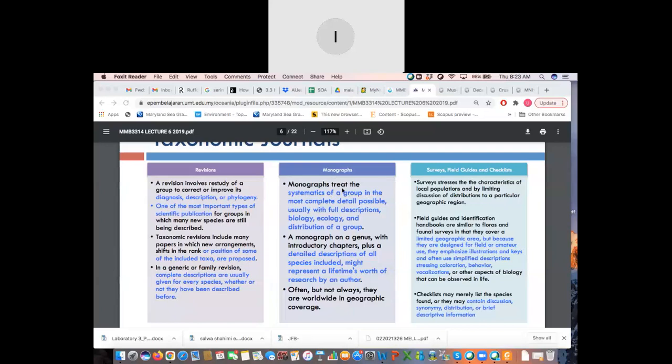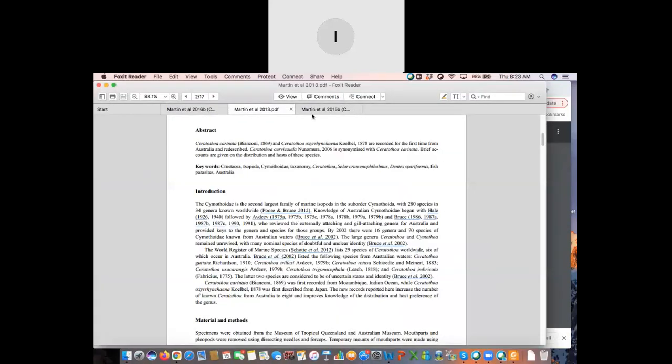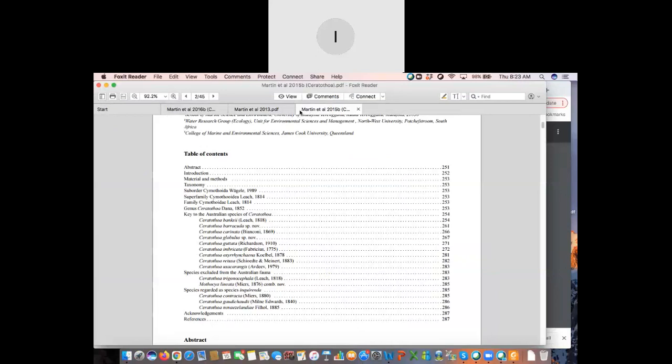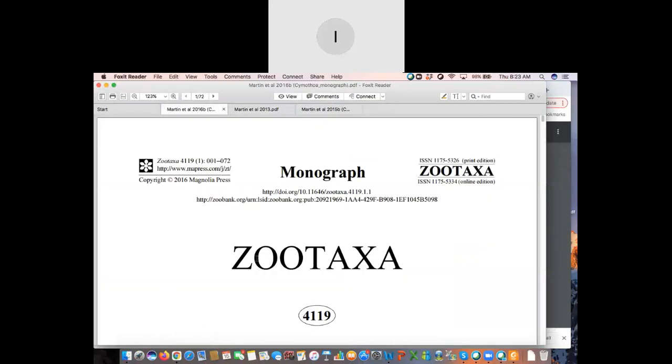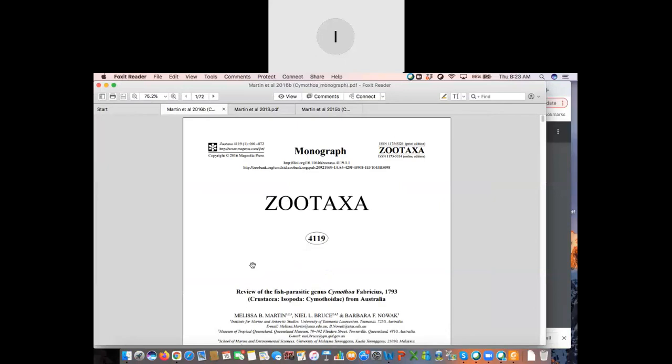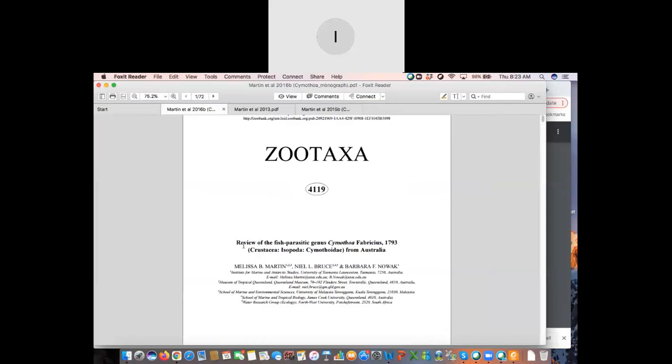So, this is the mother of all papers, the monographs. Monographs treat the systematic group in a most complete and detailed possible way. It covers biology and ecology as well. So, a monograph on a genus with introductory chapters plus a detailed description of all species included. Often but not always, they are worldwide in geographic coverage.